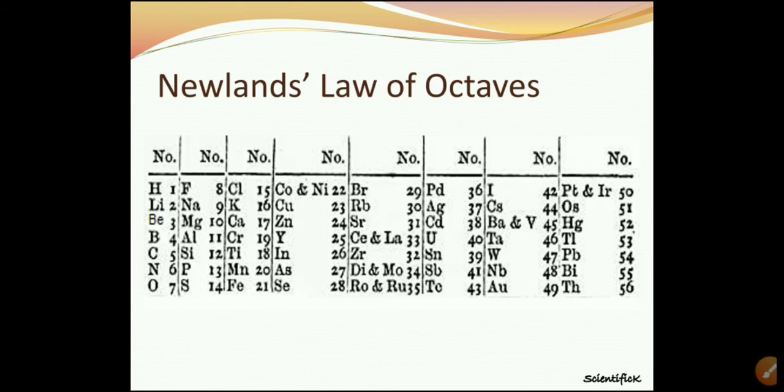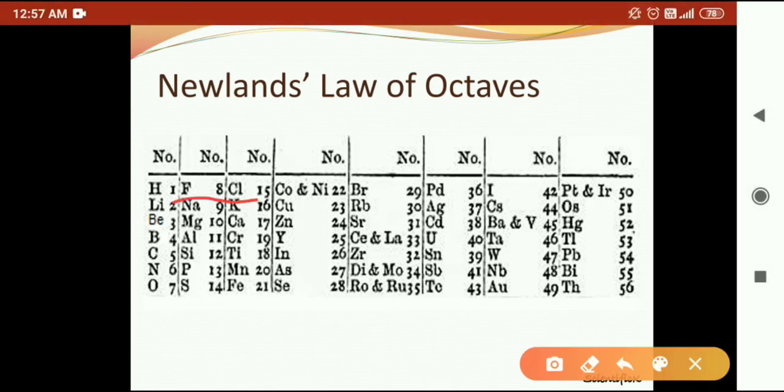Here what you see in horizontal rows - these properties will be the same because first and eighth element, we have seen in the previous slide: lithium and sodium, beryllium and magnesium, boron and aluminium, carbon and silicon, nitrogen and phosphorus, oxygen and sulfur, and then fluorine and chlorine. And so on, first and eighth element will be the same. So you have to read horizontally - horizontally placed elements' properties will be the same. This was said by Newland.